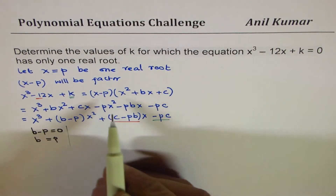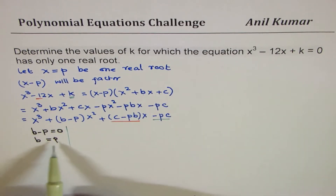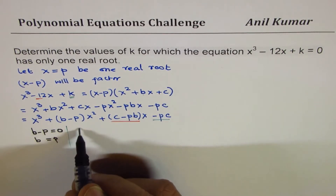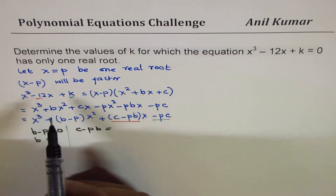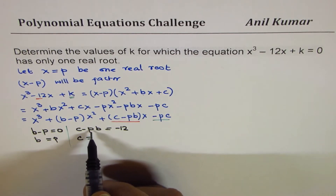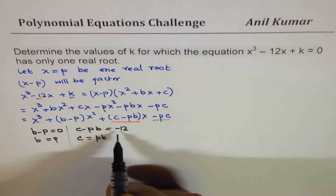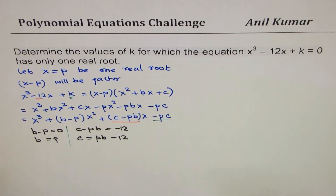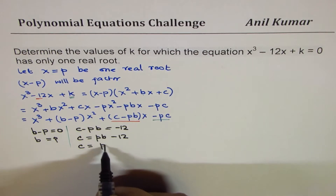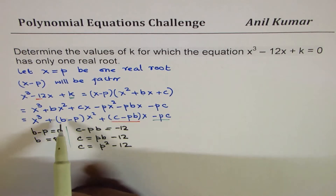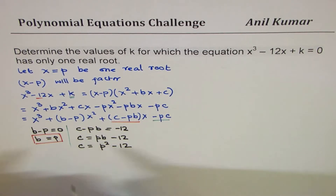So we get one value: in this quadratic equation, b = p. Now let us substitute into the coefficient of x, which is -12. We get c - pb = -12, so c = pb - 12. Since b = p, we can write c = p² - 12. So we get the values of b and c in terms of our root p.